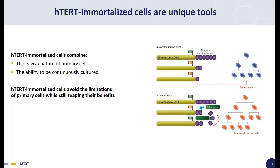However, in continuous cells, such as cancer cells, the human telomerase enzyme, also known as hTERT, functions to prevent the shortening of the telomere, thus allowing the process of cellular division to continue indefinitely, causing these cells to become immortal in nature.